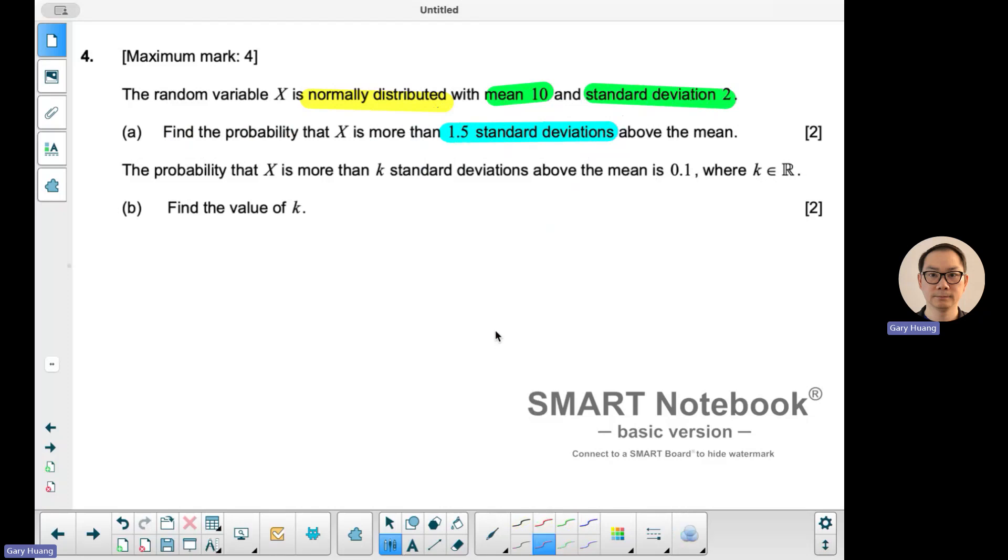When you have something 1.5 standard deviations away, that means the z-score is equal to 1.5. You can solve for the x value and then do your normal cdf with the mean of 10 and standard deviation of 2.